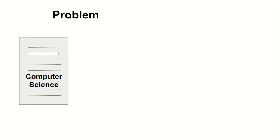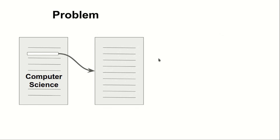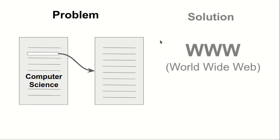For example, a computer science research paper would contain a reference link that would lead to another research page, which would also contain details on computer science. This functionality of following reference links was missing in the initial stage, so it was a problem for them.